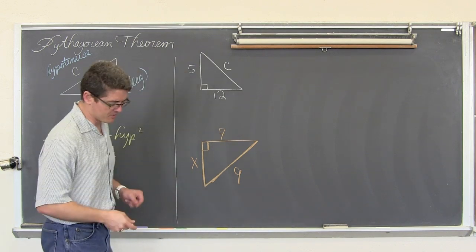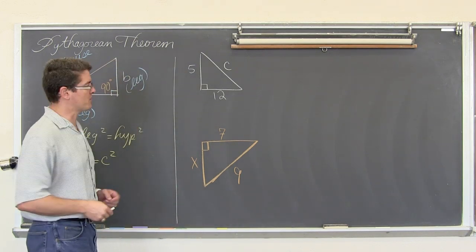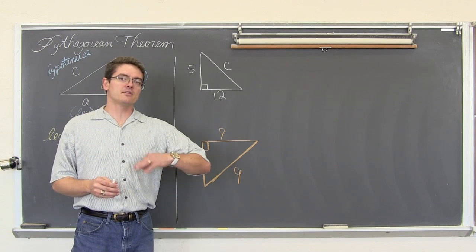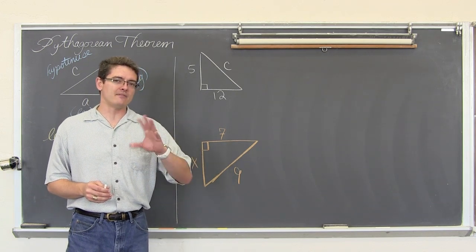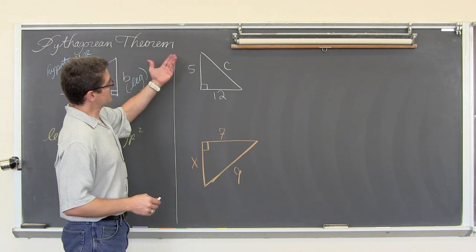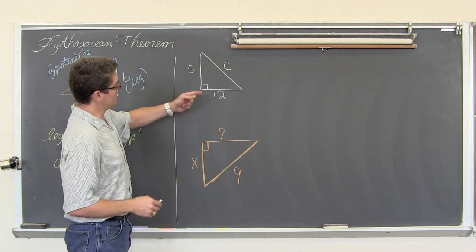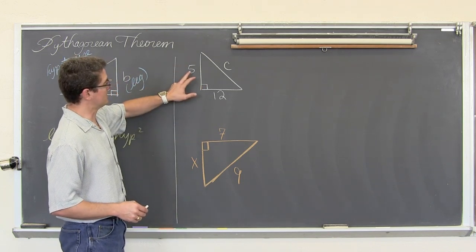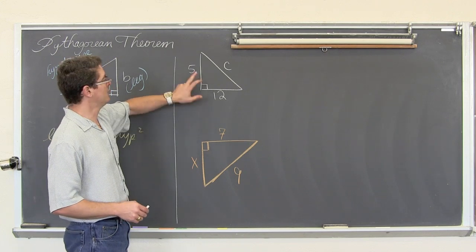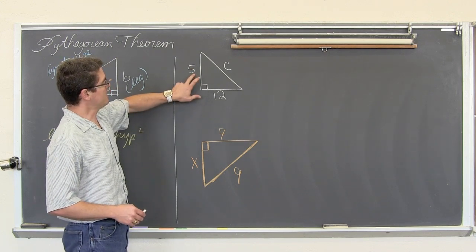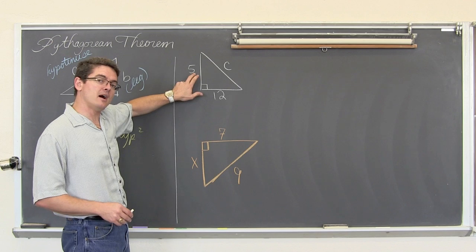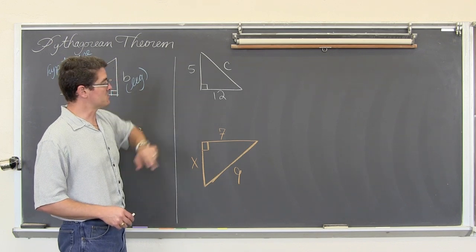We are going to do four examples with increasing difficulties. I will do another video with three more advanced examples that have a little bit of algebra involved. So we have a right triangle — indicated by the corner — with a leg drawn with a length of five, and the other leg is a length of twelve. This is certainly not drawn to scale.